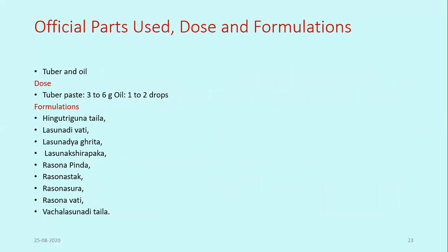Regarding official parts, dose, and formulations, the tuber and oil of Lashuna are used medicinally. The dose is 3 to 6 grams of tuber paste or 1 to 2 drops of oil. Important formulations include Hingu Triguna Taila, Lasunadi Vati, Lasunadi Ghrita, Lasuna Kshirpaka, Rasuna Pinda, Rasuna Shaka, Rasuna Sura, Rasuna Vati, and Vacha Lasunadi Taila.